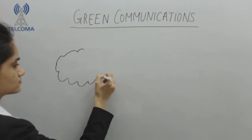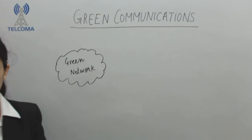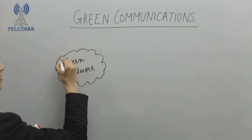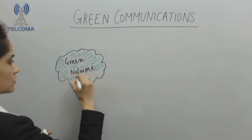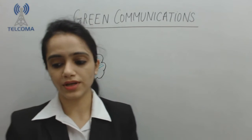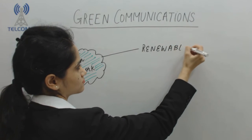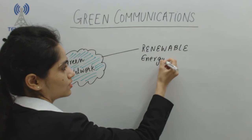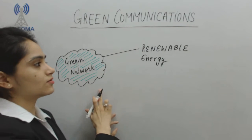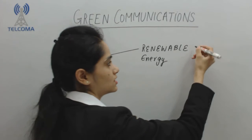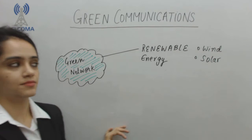In a green network, we require that we are going to use energy, and that energy is renewable energy. The power that we are currently using is consumable and non-renewable, so in a green network we can use renewable sources of energy — we can use wind energy and solar energy to keep the network working.